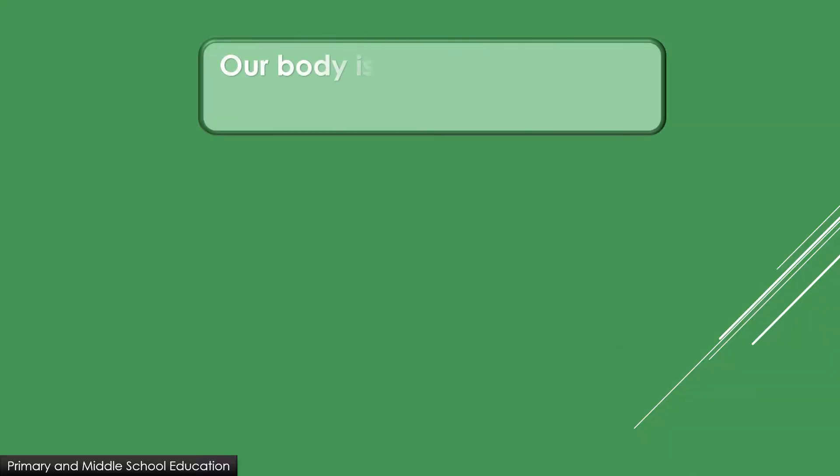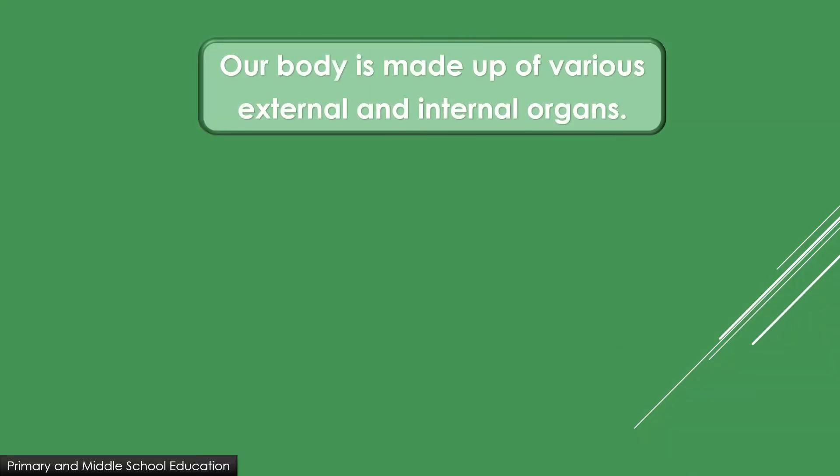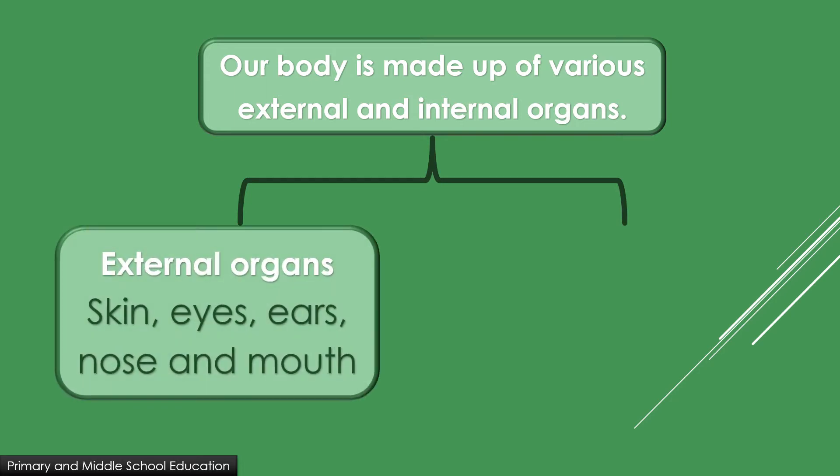Our body is made up of various external and internal organs. External organs are those which we can see. For example, skin, eyes, ears, nose, and mouth.